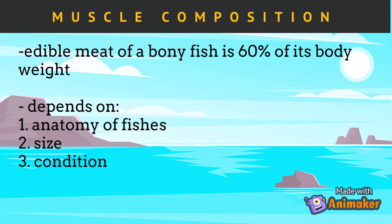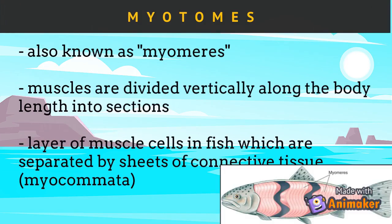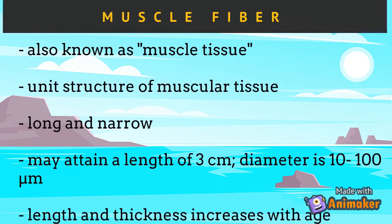Myotomes, also known as myomeres, are muscles divided vertically along the body length into sections. These are layers of muscle cells in fish which are separated by sheets of connective tissue known as myocomata. Muscle fiber, also known as muscle tissue, is a unit structure of muscular tissue. It is usually long and narrow, which may attain a length of three centimeters and a diameter of 10 to 100 micrometers. The length and thickness of muscle fiber increases with age.